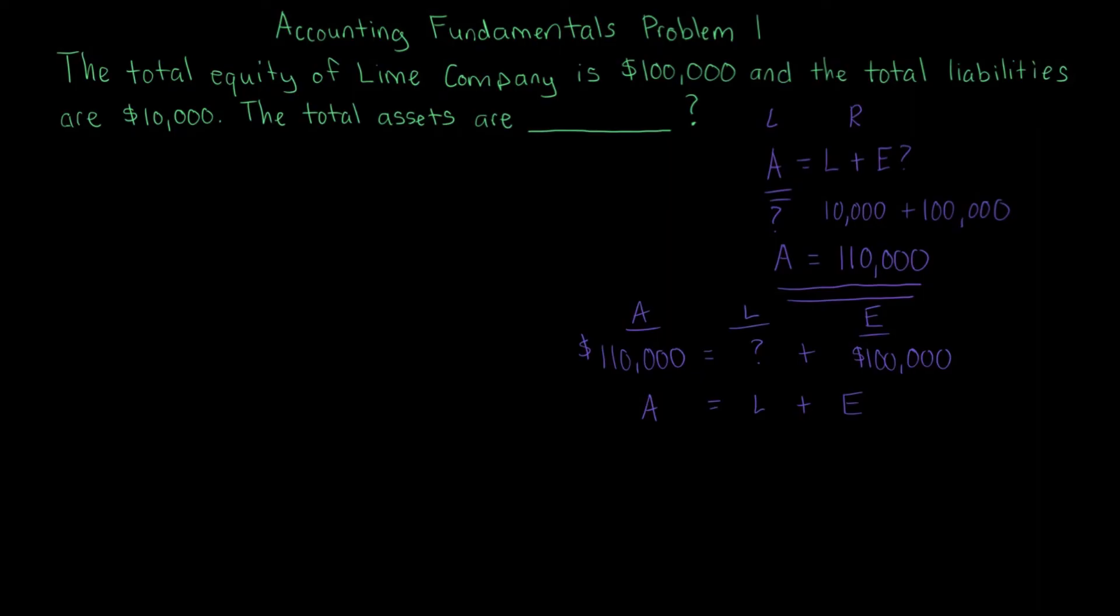You're solving for X or whatever the unknown is. You could bring assets over—if you subtract away equity, remember the rule in algebra: what you do to one side you must do to the other. So if we subtract the equity, it eliminates that, and then liabilities equals assets minus equity. Or if you do the same thing, you could get assets minus liabilities equals equity if you were solving for equity.